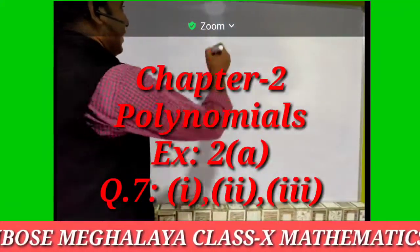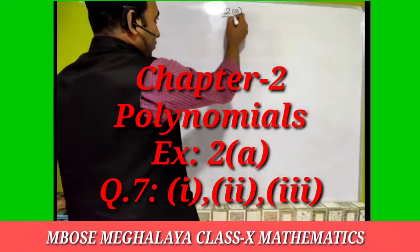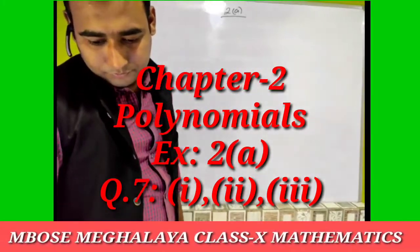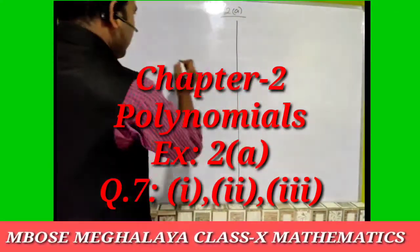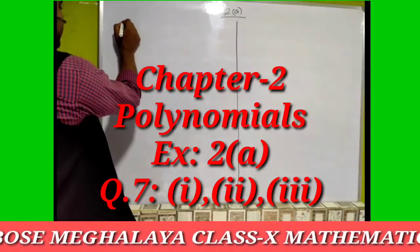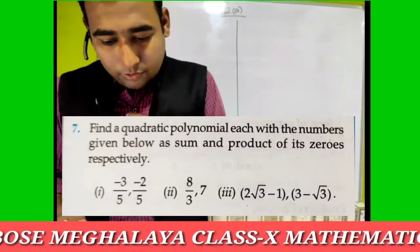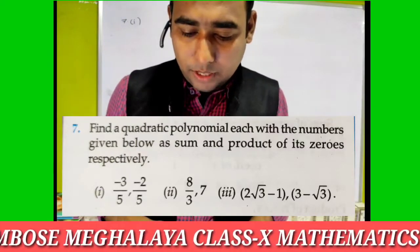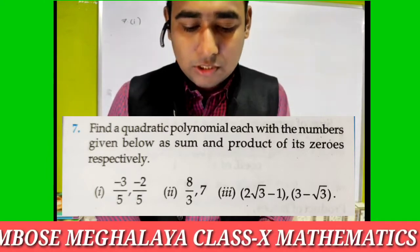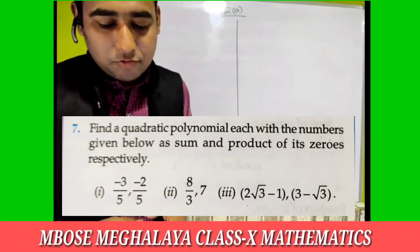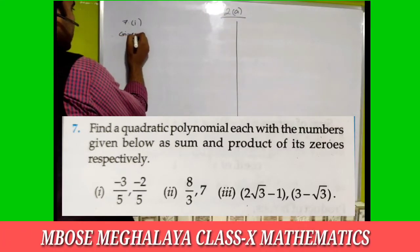Today we will do Exercise 2, question number seven. Question number seven, sub-number one. The question is: find a quadratic polynomial with the numbers given below as sum and product of its zeros respectively. The sum of the zeros and product of the zeros are given directly.